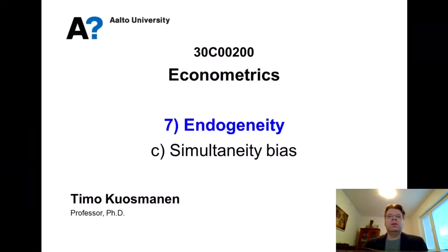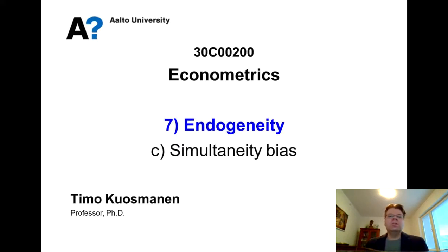The third commonly cited source of the endogeneity problem is the so-called simultaneity bias. This is the original context where econometricians started to understand the endogeneity problem, and this is also where the name 'endogeneity' comes from. Nowadays the term endogeneity refers to any situation where the explanatory variables X are correlated with the epsilon, whether it's measurement errors in X, omitted variables, or some kind of simultaneity.